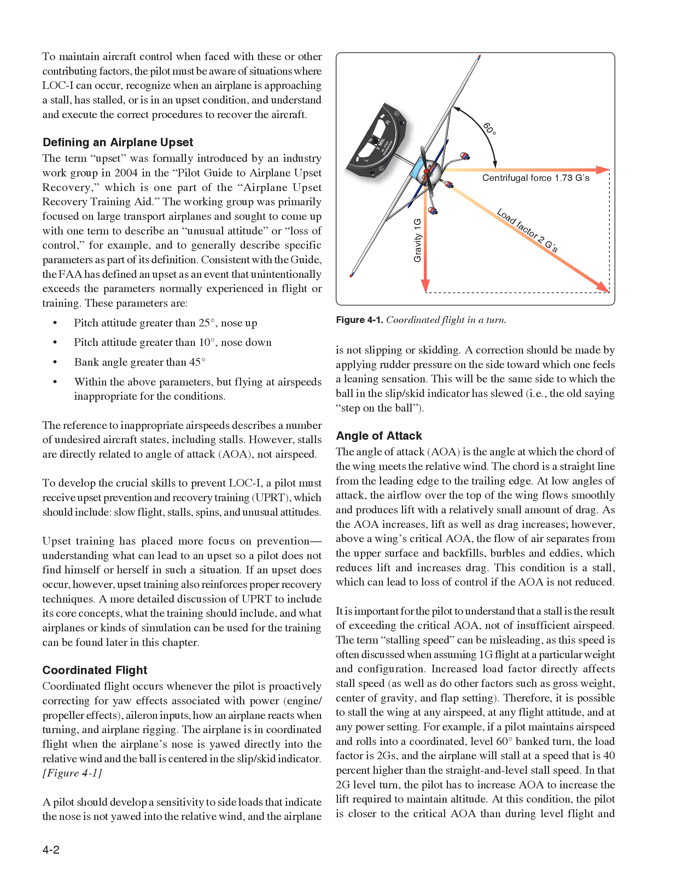Consistent with the guide, the FAA has defined an upset as an event that unintentionally exceeds the parameters normally experienced in flight or training. These parameters are: pitch attitude greater than 25 degrees nose up, pitch attitude greater than 10 degrees nose down, bank angle greater than 45 degrees, or within those parameters but flying at airspeeds inappropriate for the conditions. The reference to inappropriate airspeeds describes a number of undesired aircraft states, including stalls.